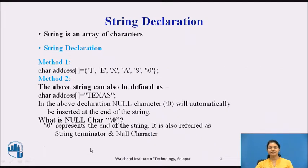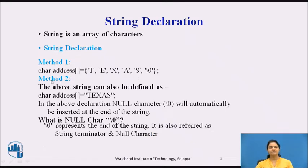First we will see string declaration. A string is nothing but an array of characters. In string declaration there are many types. In the first method, the string is stored in an address and declared using character array. For example, we can store 'TEXAS' and at the end we include '\0', which is the null character, to indicate the end of that particular string.